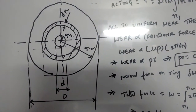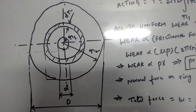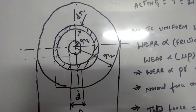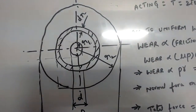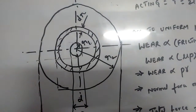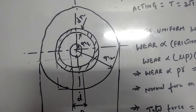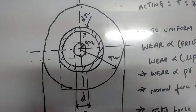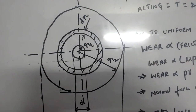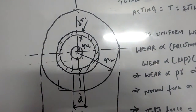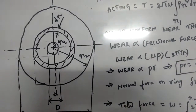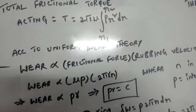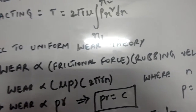When the plate is a new one, we can apply uniform pressure theory. When the plate is under working condition gradually, wearing takes place. So the pressure is not uniformly distributed along the circumference of the plate when it becomes an older one, as wearing occurs.